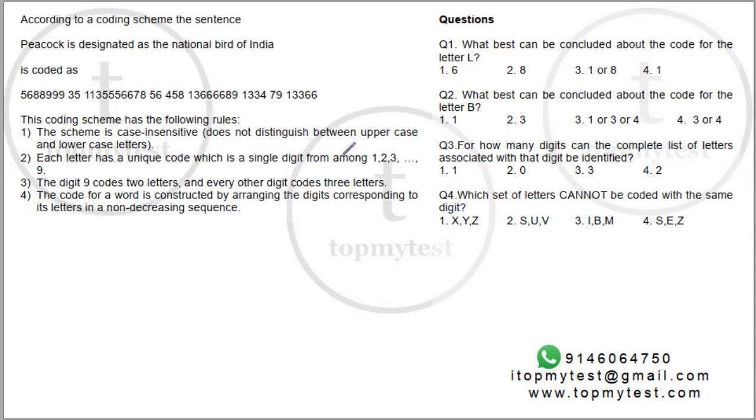Hi, this is a question on coding and decoding. It's a moderate level question. It's not difficult and if you have practice solving bank level papers, this question should not be very difficult to solve. Let's see what this says. According to a coding scheme, the sentence 'Peacock is designated as the national bird of India' is coded as this. There's some number scheme which is given.